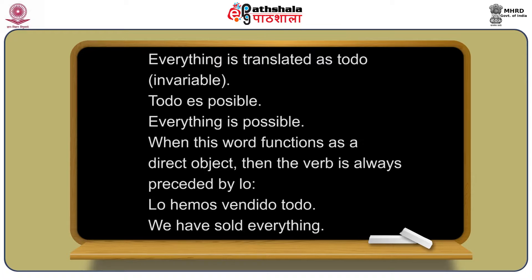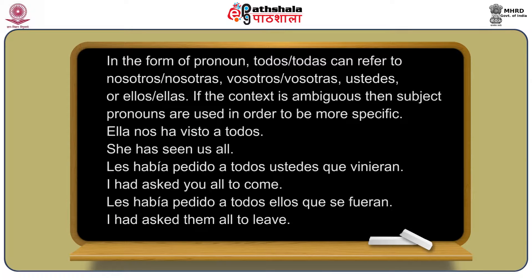'Everything' is translated as 'todo' and it is invariable. Example: 'Todo es posible' — everything is possible. When this word functions as a direct object, the verb is always preceded by 'lo.' Example: 'Lo hemos vendido todo' — we have sold everything. Here you can see the use of 'lo' at the beginning of the sentence with 'todo' coming at last.